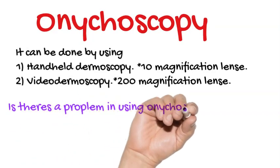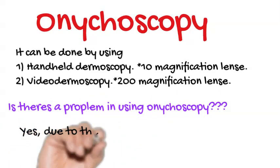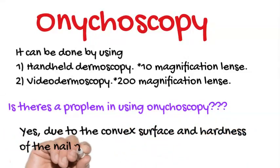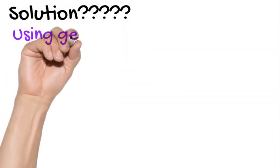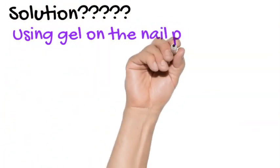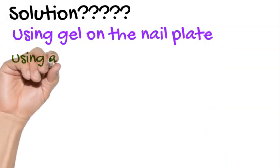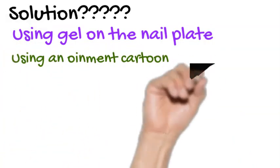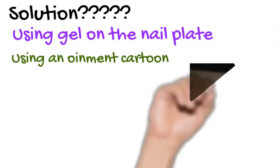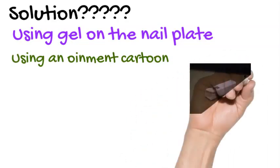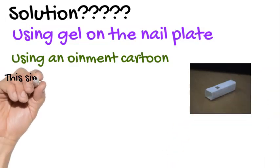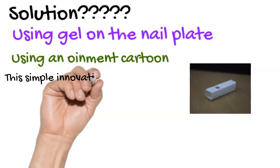There is a problem in using dermoscopy on nails due to the convex surface and the hardness of the nail plate. The solution is using a gel on the nail plate or using an ointment curtain — where there is an opening — placed on the proximal nail fold.